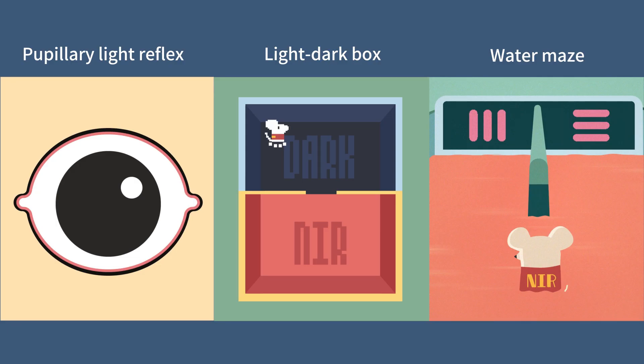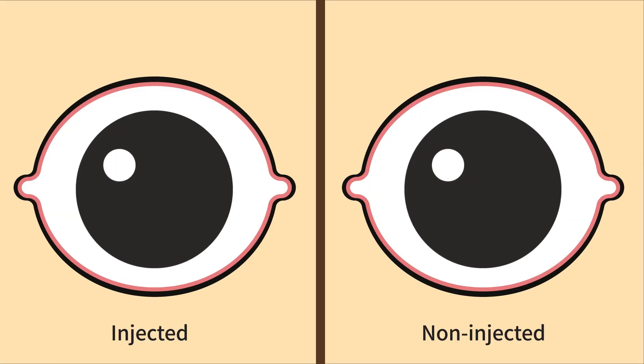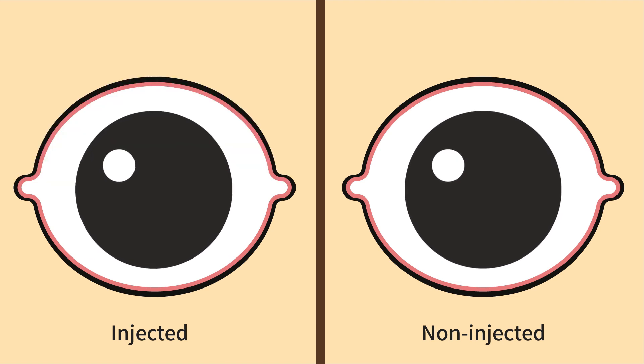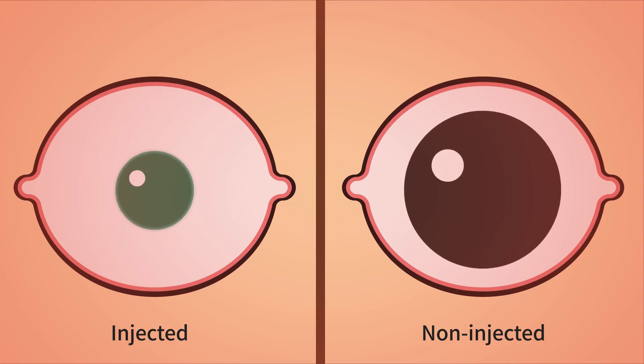To prove that the injected mice could see near-infrared light, the scientists did multiple experiments. In one simple experiment called pupillary light reflex, they shined near-infrared light into the eyes of injected and non-injected mice. The pupils of the injected mice constricted, while the non-injected mice showed no response at all.